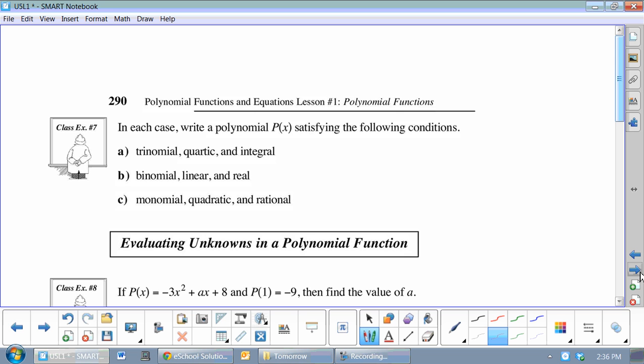Now, just write the polynomial. Make one up. So, a trinomial, that's quartic, and integral. So, a quartic would be the x to the 4 in there. Remember, trinomial means three terms. So, we're going to do something with three terms in it. The 4 is the biggest one. So, like maybe 3x squared minus 9. So, quartic because of the degree, three terms, and integral because I used integers.